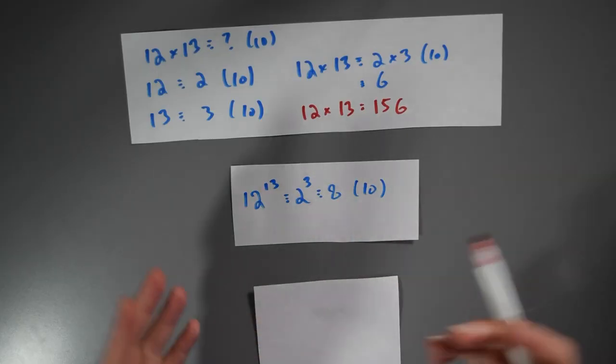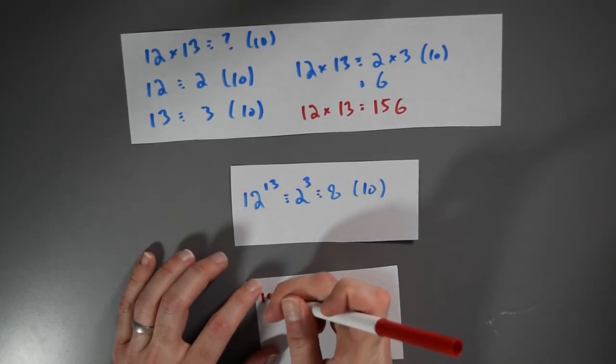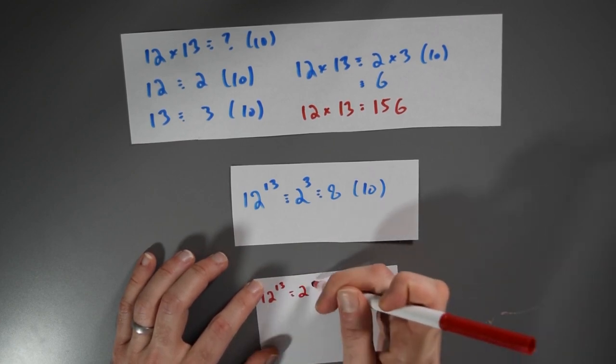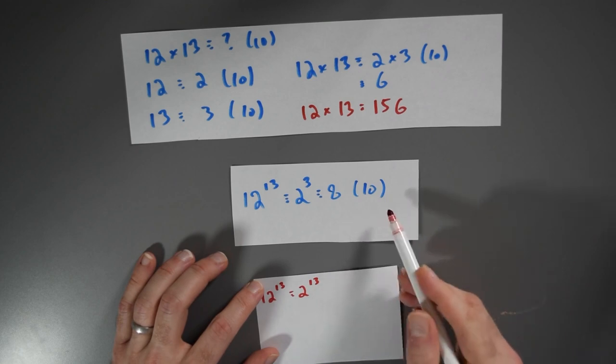Well, let's compute 12 to the 13th a different way. 12 to the 13th power will be the same thing as 2 to the 13th power modulo 10.